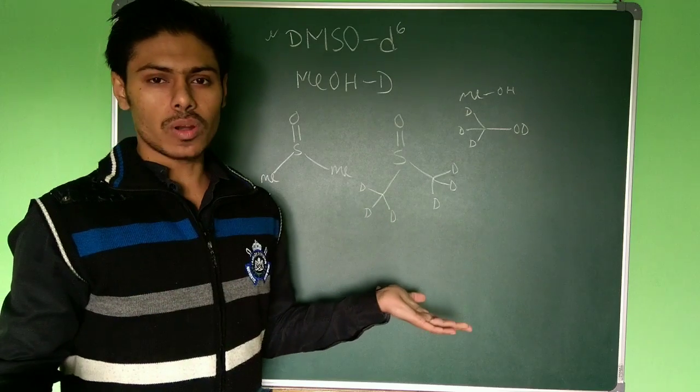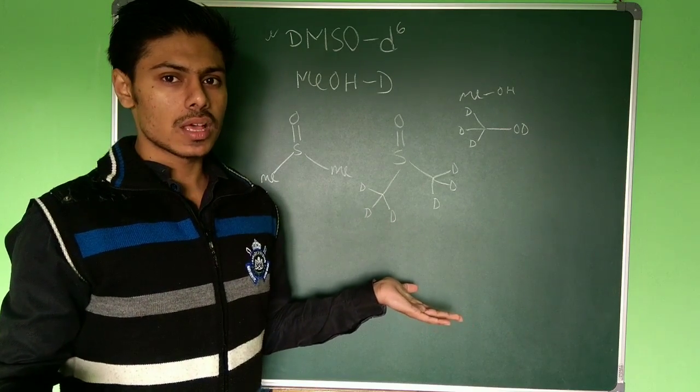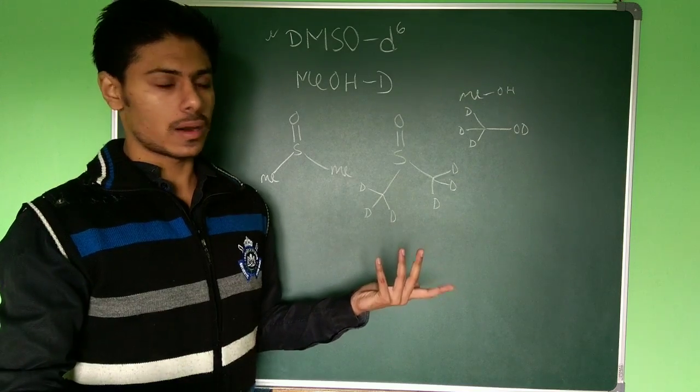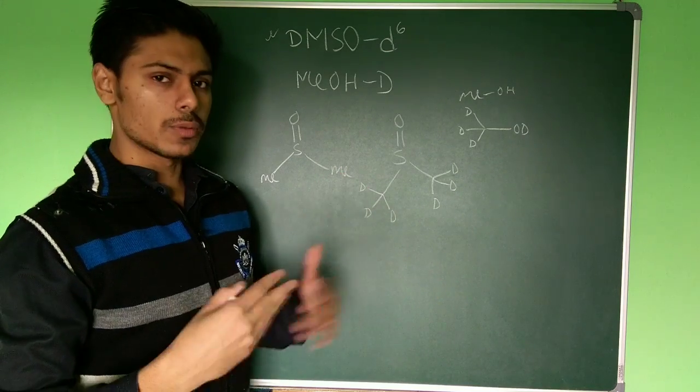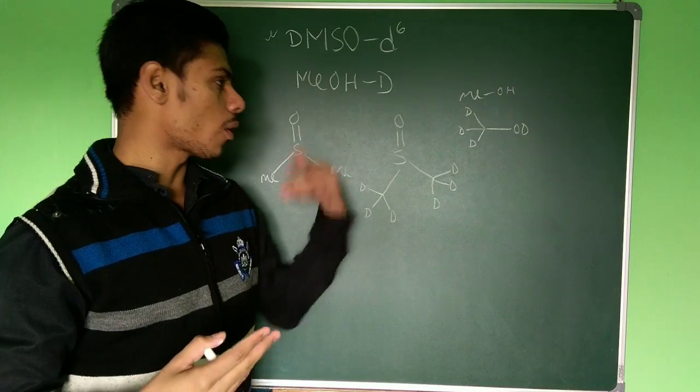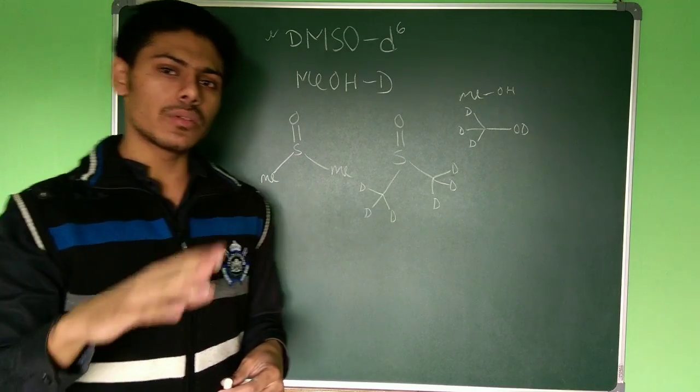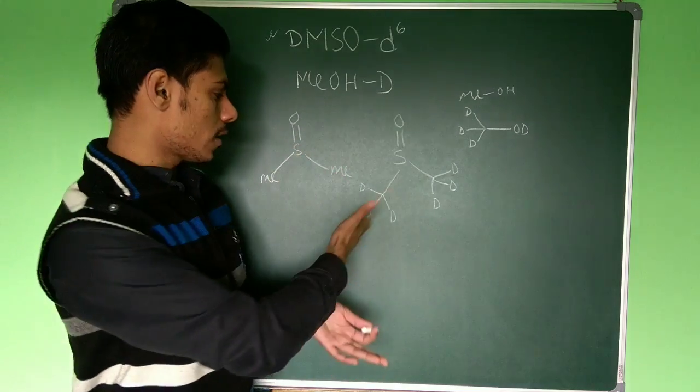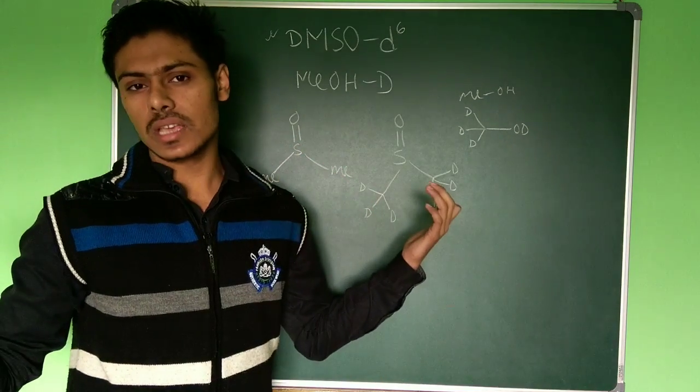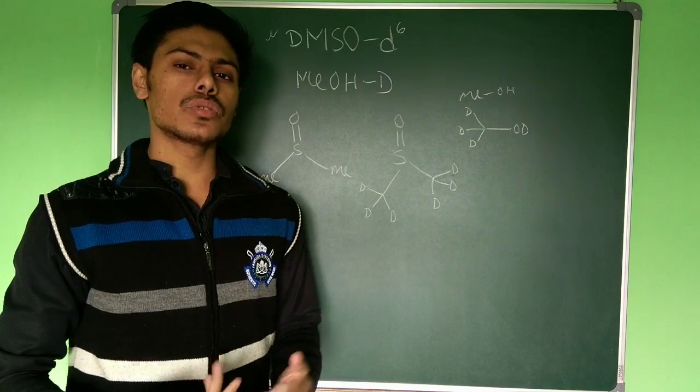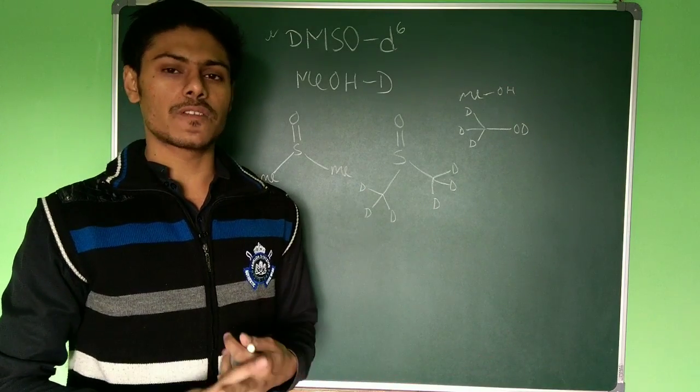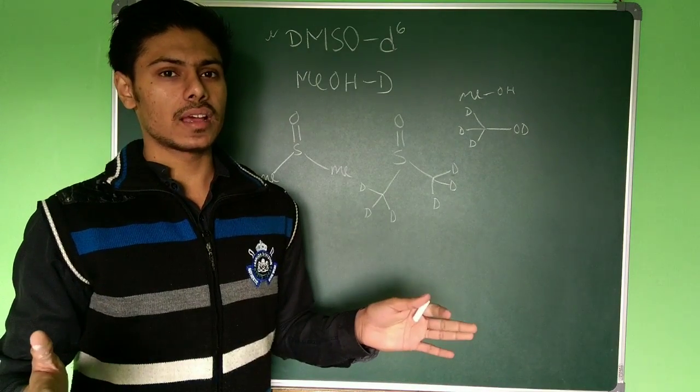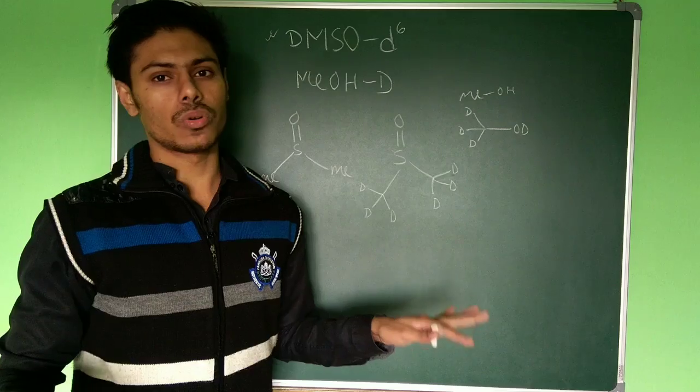Now you know we take the proton NMR. Deuterium will not give any signal in proton NMR. So the first question is, if you look at the NMR when you run NMR and you prepare sample in DMSO-D6 or methanol-D, you will see that there will be a peak corresponding to methanol or corresponding to DMSO. Now if deuterium is there which will not respond in proton NMR, so how does the signal come? This is the first question of the interview.